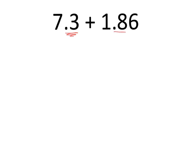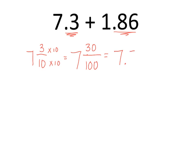Next one is 7 and 3 tenths plus 1 and 86 hundredths. This one is different, because here we only have tenths and over here we have hundredths. So we must rename the 7 and 3 tenths. We are going to multiply the top and the bottom by 10 to bring us to 7 and 30 hundredths. And how does that look as a decimal? Well, 7 and 30 hundredths — it's equivalent to 7 and 3 tenths, because all we did was multiply by 10.